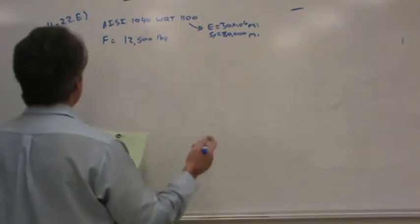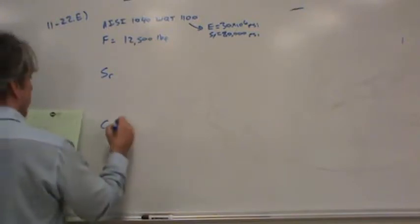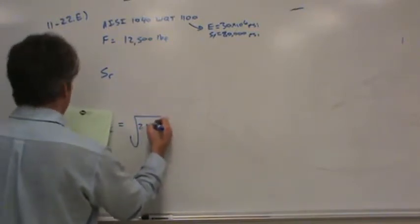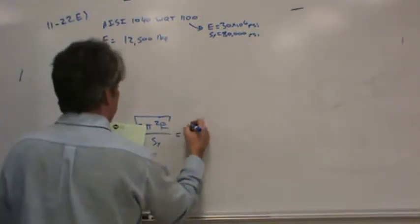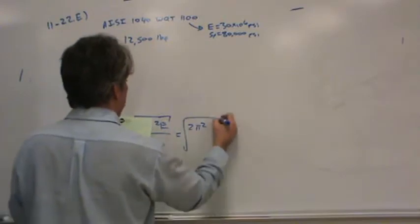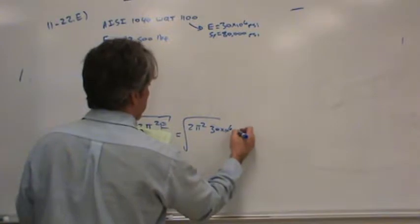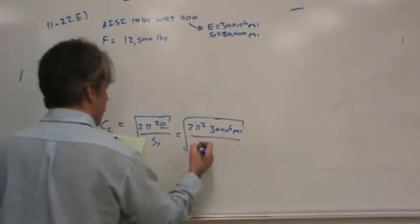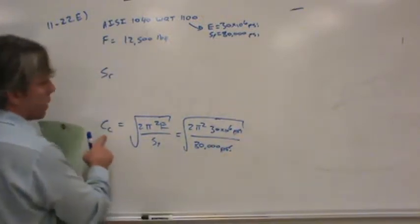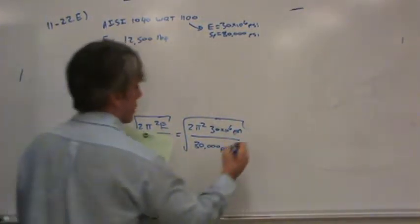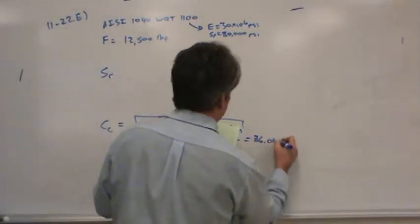One of the first things to do is to find out the slenderness ratio and compare it to the column constant. Now, the column constant, we can go ahead and calculate because we've got the material properties. So 2π² multiplied by 30 times 10⁶ PSI divided by the yield strength of 80,000 PSI. The column constant ends up being dimensionless. Numerically, it is 86.04 and it's non-dimensional.